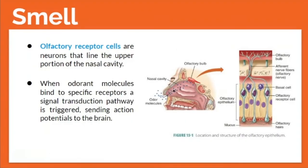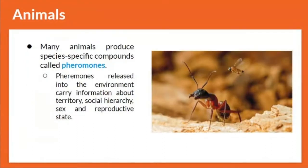For smell: olfactory receptor cells are neurons that line the upper portion of the nasal cavity. When odorant molecules bind to specific receptors, a signal transduction pathway is triggered, sending action potentials to the brain. Many animals also produce species-specific compounds called pheromones, which are released into the environment and carry information about territory, social hierarchy, sex, and reproductive state.